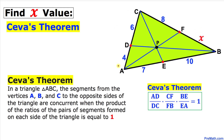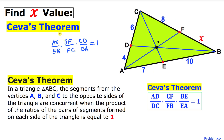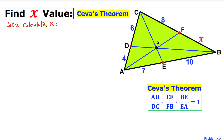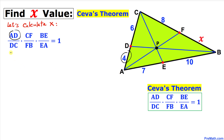Should you decide to go counterclockwise, the formula simply becomes the counterclockwise version, and both of these formulas are valid. Now let's go ahead and calculate the value of X. Here's our Ceva's Theorem — let's fill in the blanks. AD in our case is simply 4, so I can write 4.